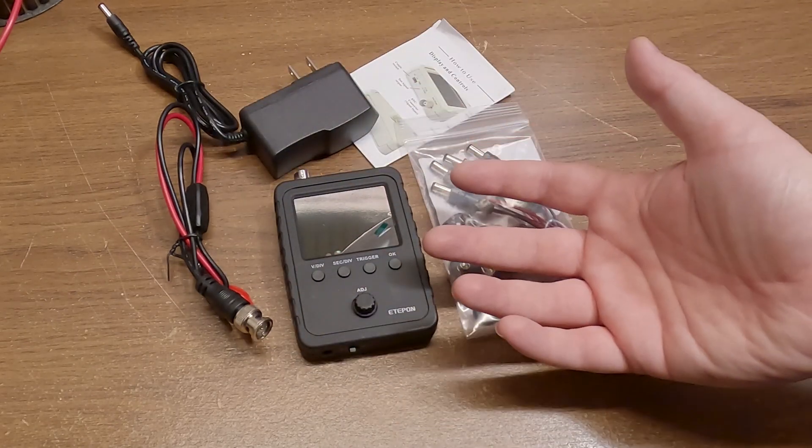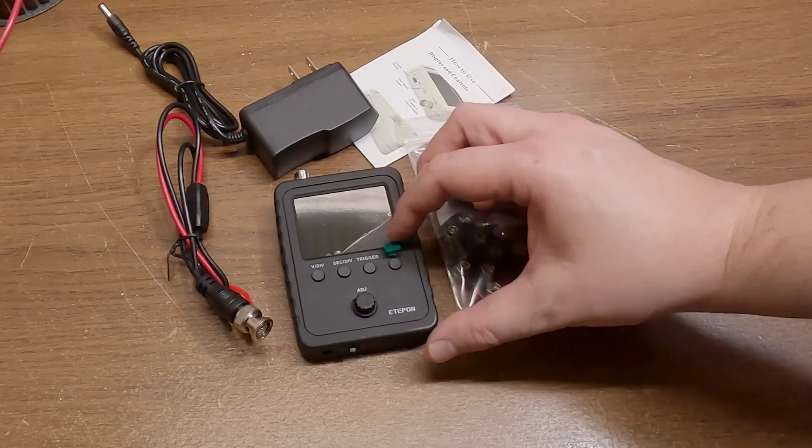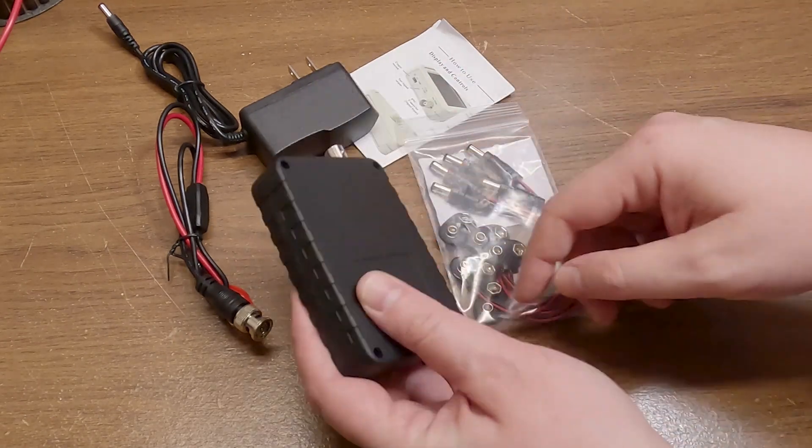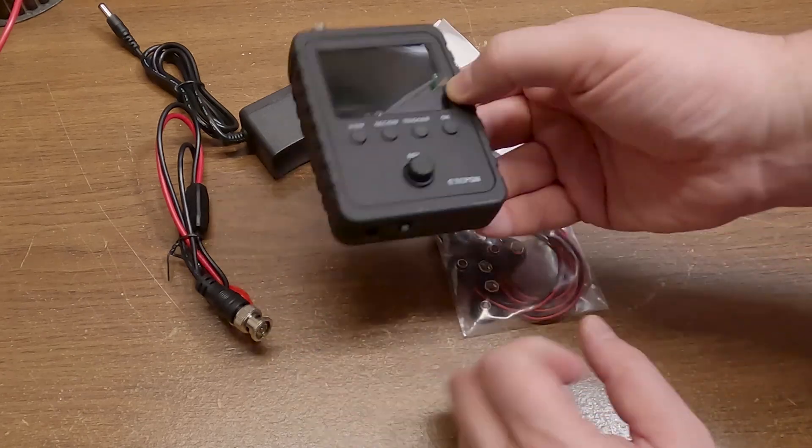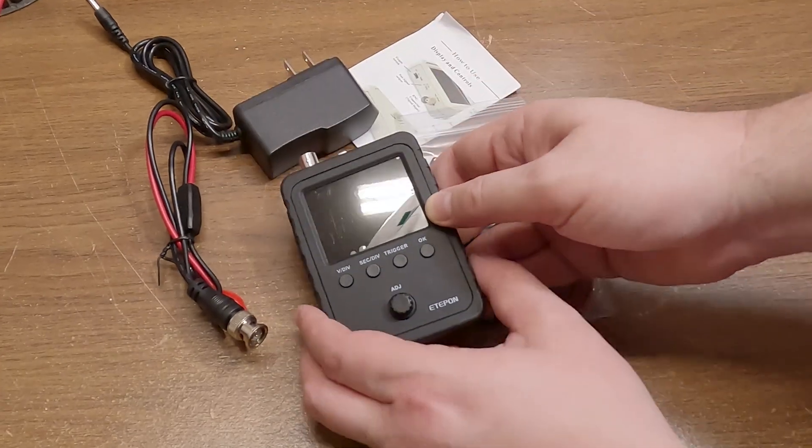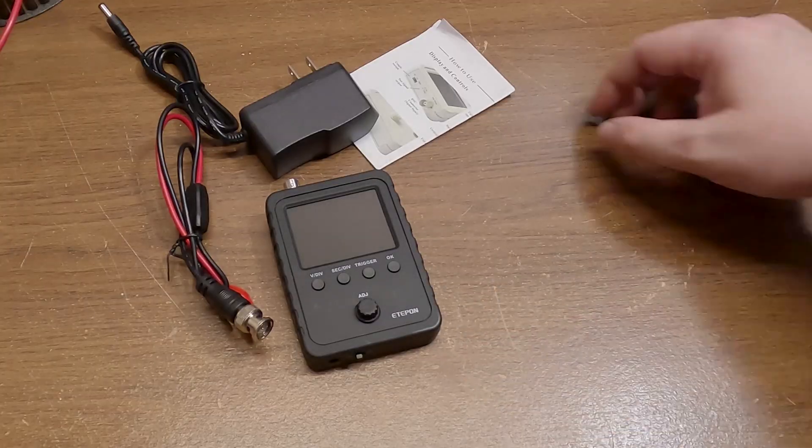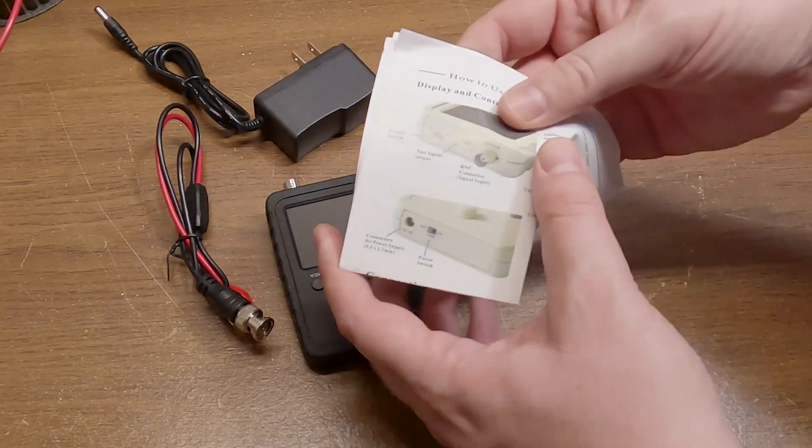I don't have any rechargeable 9-volt batteries right now, they're on their way. So whenever I get them in, I'll probably just velcro a 9-volt battery to the back of this guy and use this little lead to make this thing portable. But that's a project for another day, let's check out the instructions.